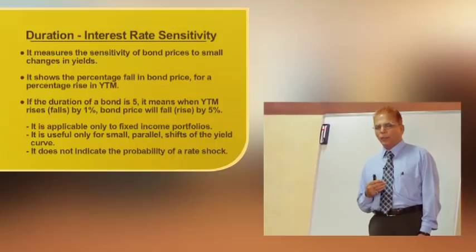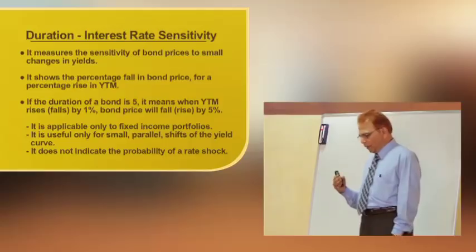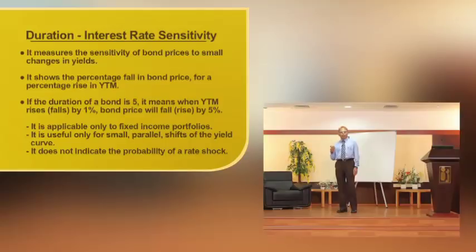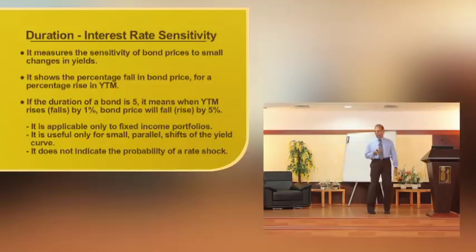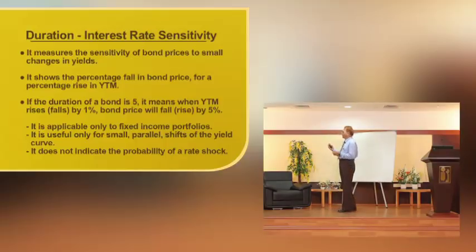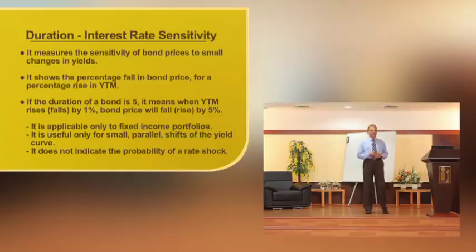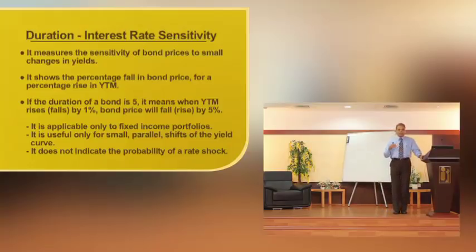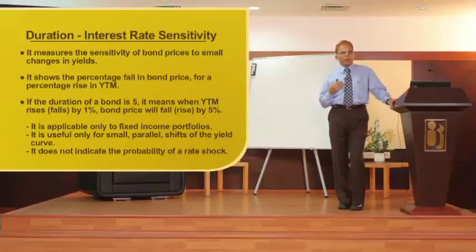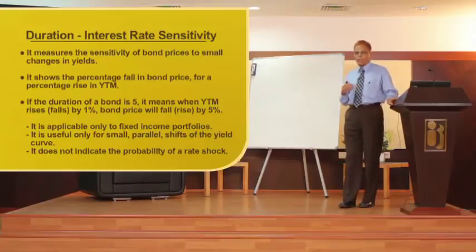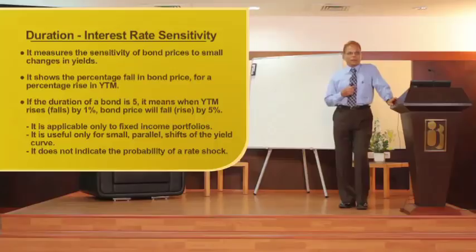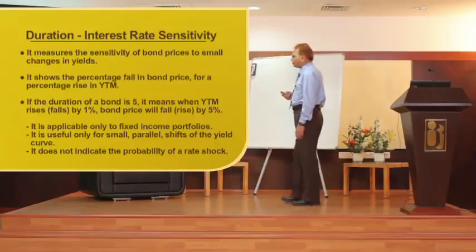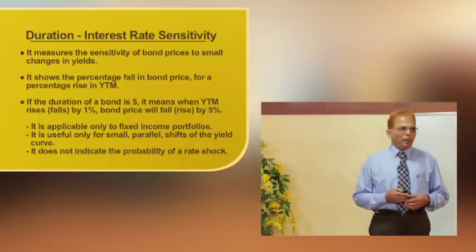For example, if you hold a 10% bond and receive a 10 rupee coupon at the end of year one, you may reinvest at 11% if rates have risen, or at 9% if rates have fallen. This changes the effective maturity due to the cash flows. Duration measures the sensitivity of the bond price to small changes in yield. The price and YTM are inversely related — if YTM goes up, the bond value comes down.